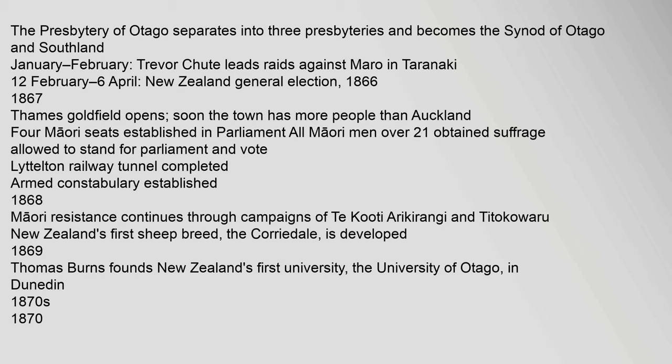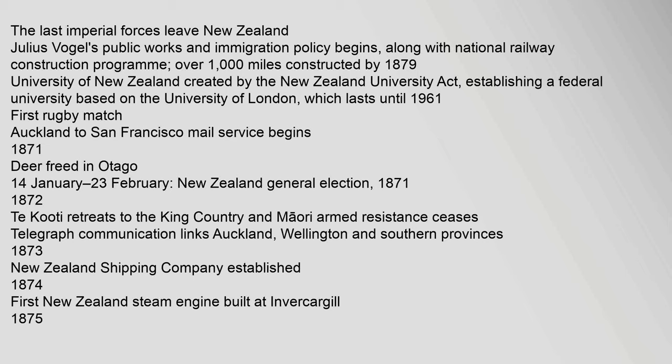1870s. 1870: The last imperial forces leave New Zealand. Julius Vogel's public works and immigration policy begins, along with a national railway construction programme — over 1,000 miles constructed by 1879. University of New Zealand created by the New Zealand University Act, establishing a federal university based on the University of London, which lasts until 1961. First rugby match played. Auckland to San Francisco mail service begins.